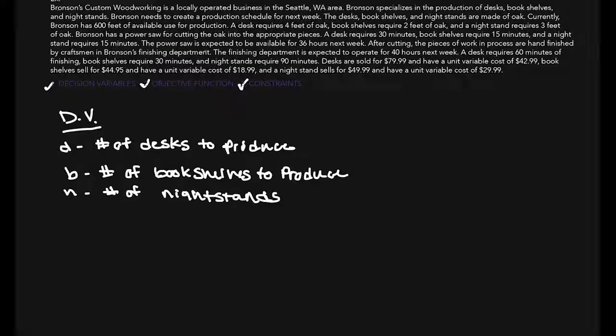Currently, Bronson has 600 feet of available oak for production. A desk requires 4 feet of oak, bookshelves require 2 feet of oak, and a nightstand requires 3 feet of oak. So that sounds like that's a part of the constraints, but let's take a look here.